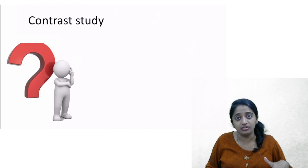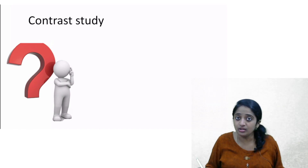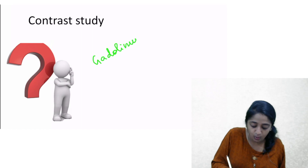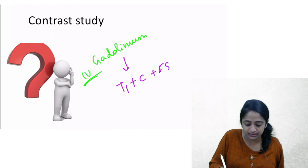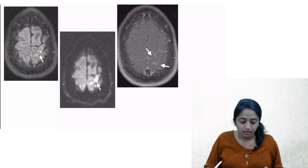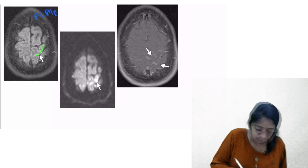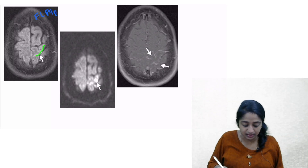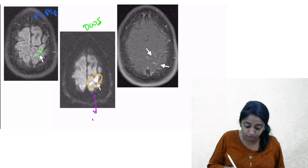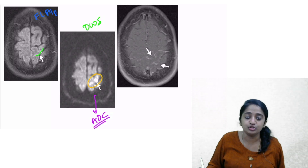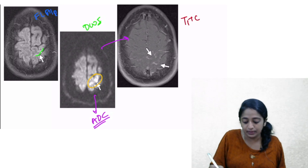Now let's consider what you get in the post-contrast sequence in a patient diagnosed with acute infarct. The contrast is given intravenously, and the image obtained is a post-contrast T1-weighted sequence with fat suppression. Here are three images: on the left is the FLAIR sequence — I see subtle hyperintensity. In the middle is the diffusion-weighted image — I see bright hyperintensity, confirmed as true diffusion restriction on ADC. And on the right is the post-contrast T1-weighted image with fat suppression.